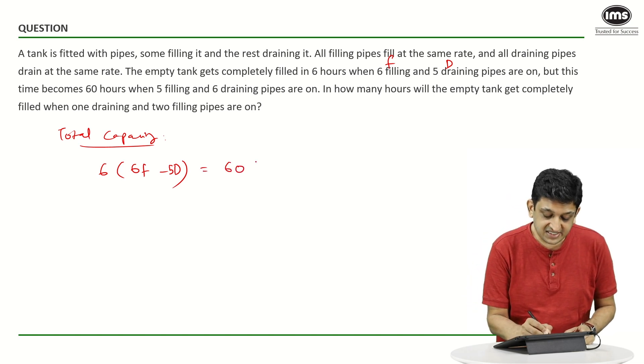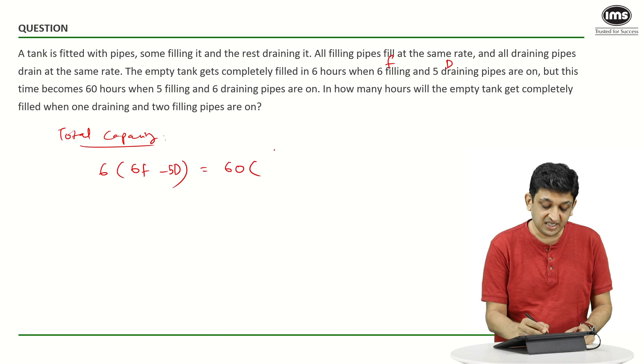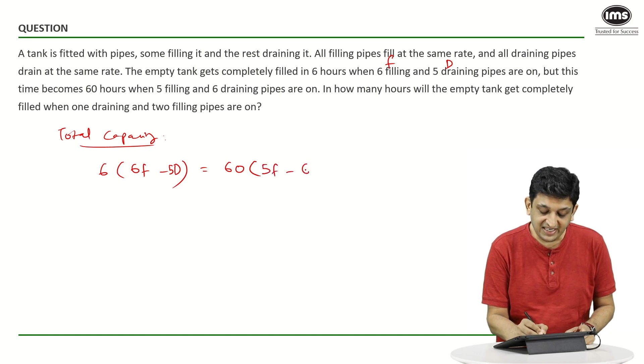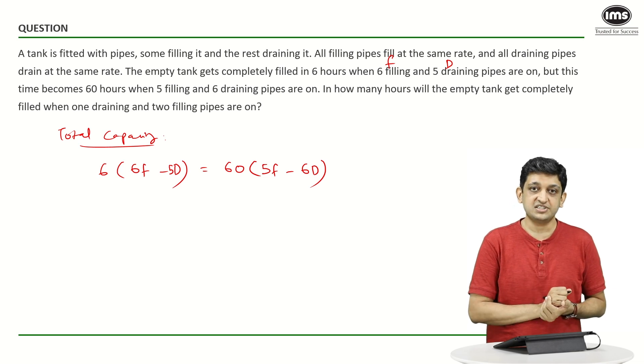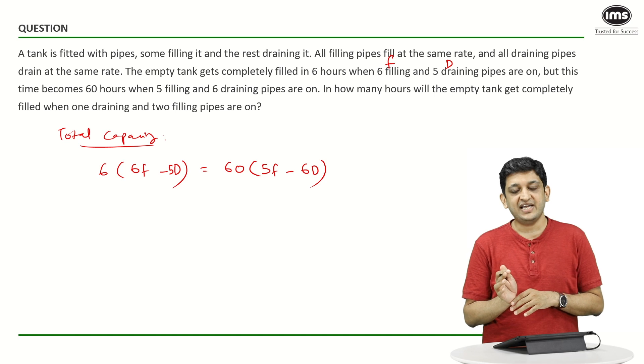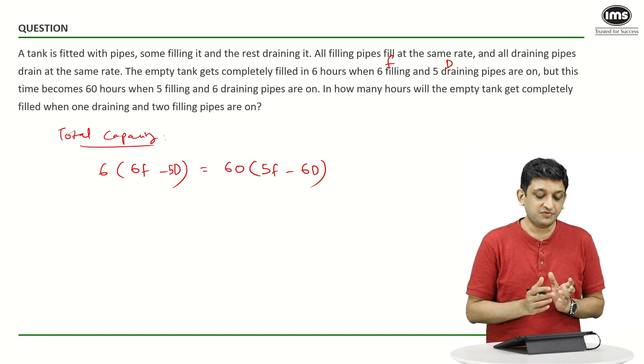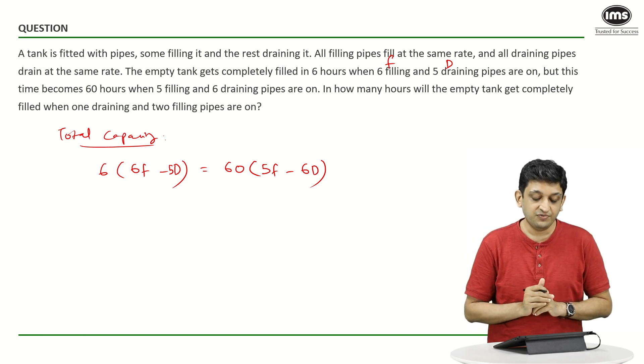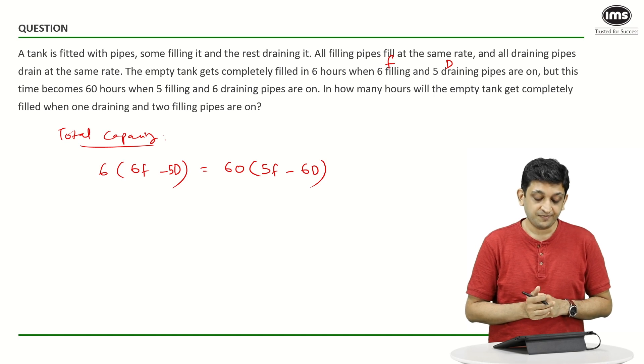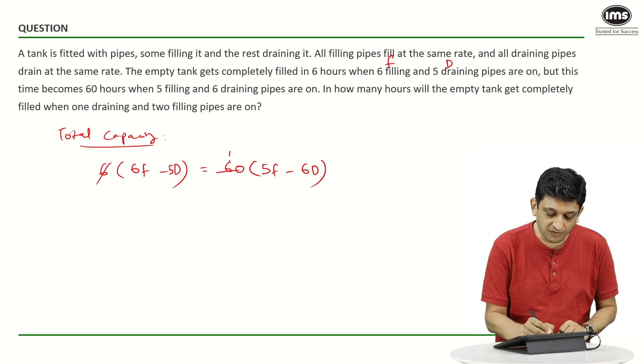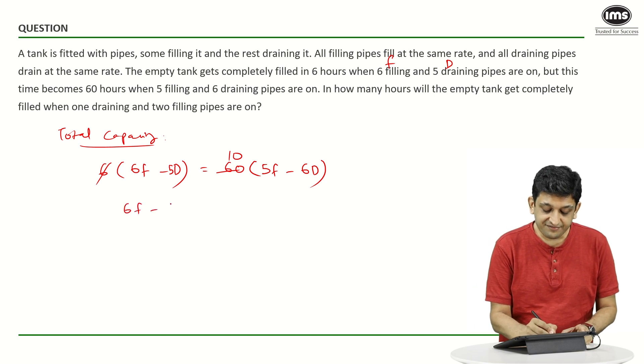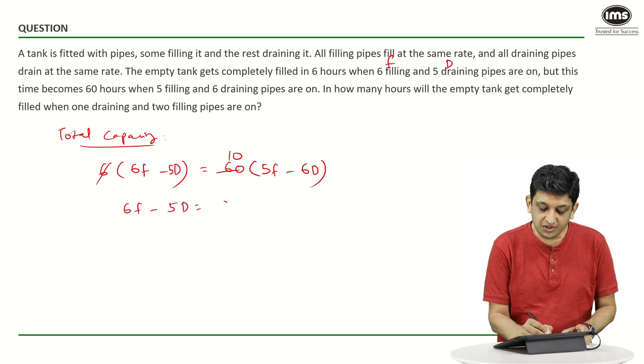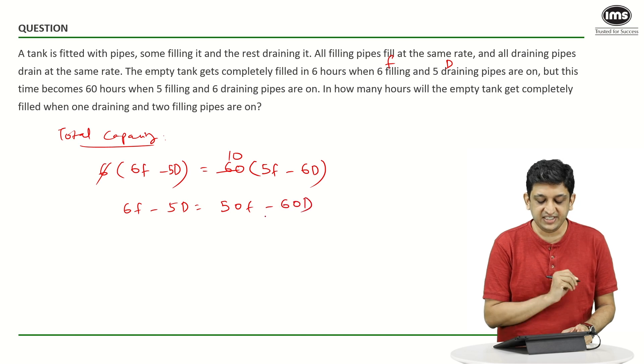This is the same as 60 hours of work that is being done by 5 filling and 6 draining pipes. So, 5F minus 6D into 60. We can equate these two and can figure out the capacity of the tank and then figure out how much time will it take 1 draining and 2 filling pipes to fill this entire tank. Let us cancel out some obvious terms here, 6 tens are 60. We are going to get 6F minus 5D equals 50F minus 60D.